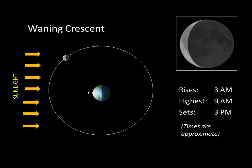The Moon will continue to wane. Now it is a waning crescent. And after about four weeks, we'll be back to where we started, at the new Moon.